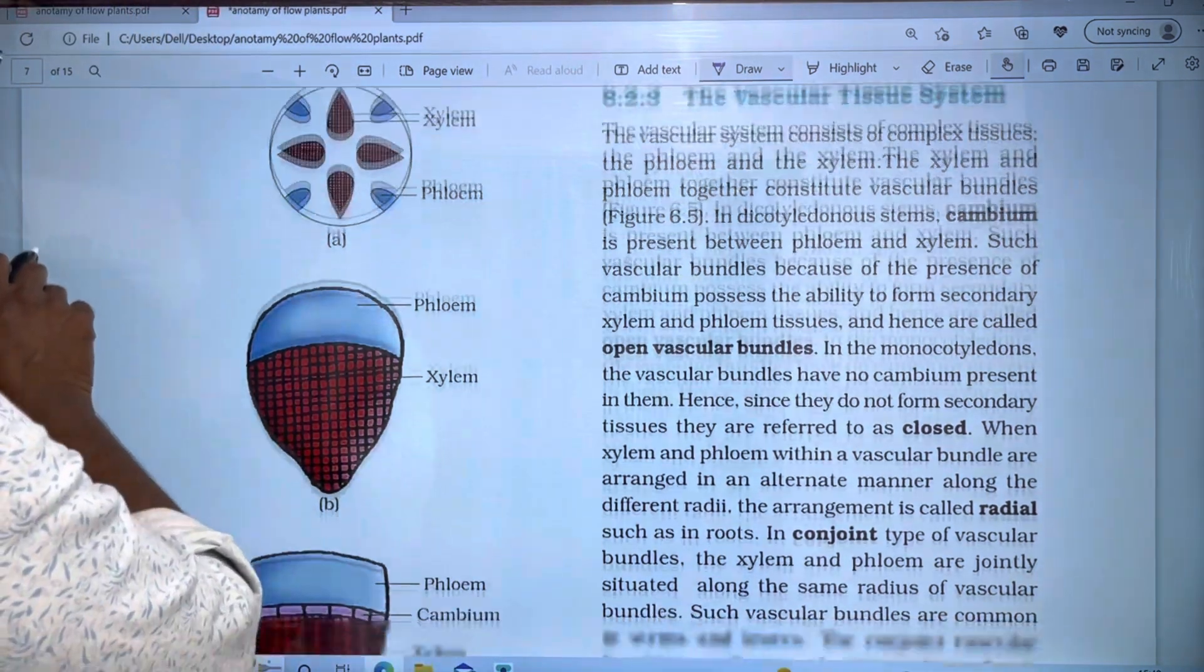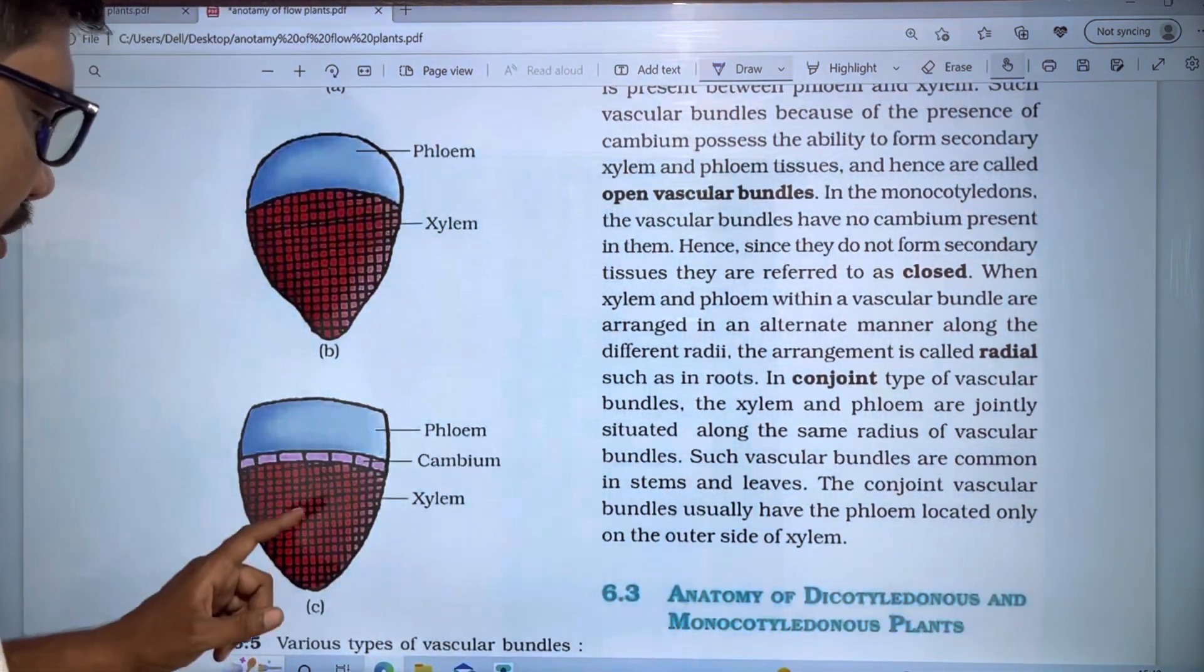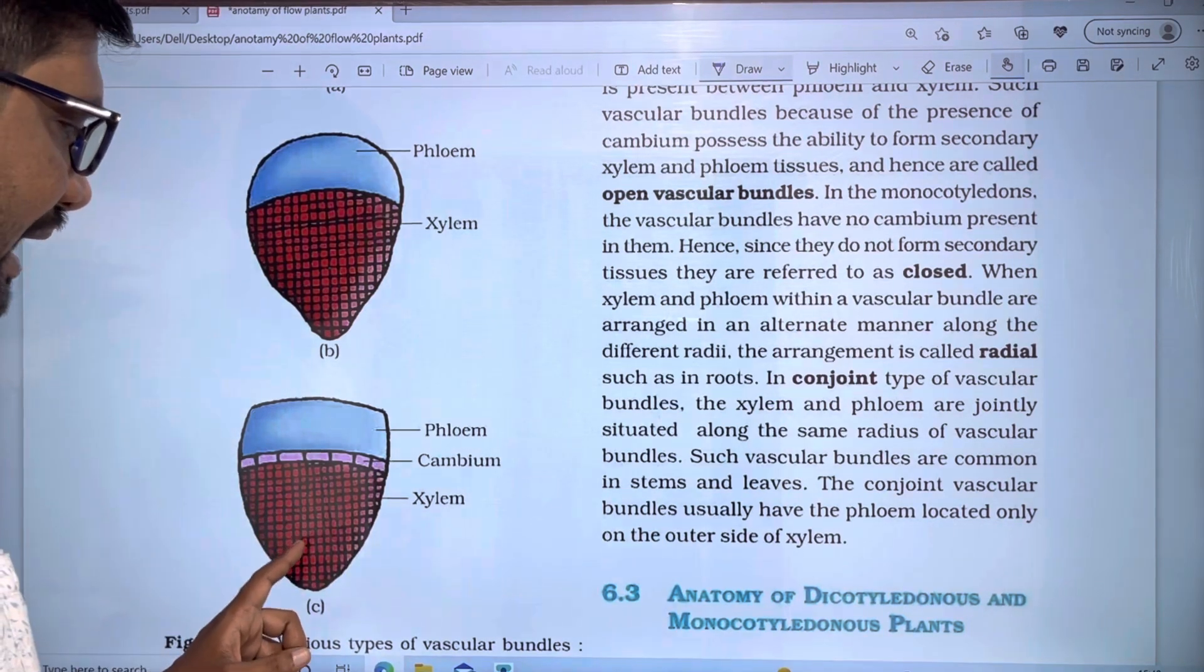For example, in this diagram, if you see here, the phloem and xylem are present, and there is xylem and phloem forming vascular bundles.